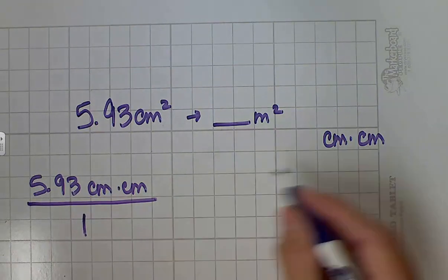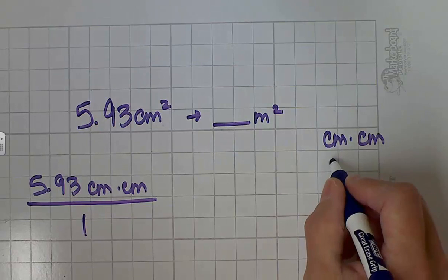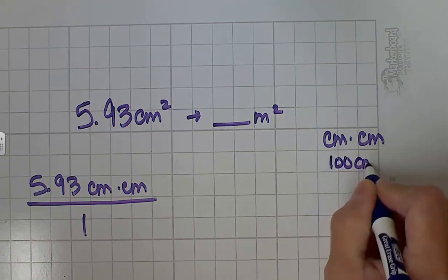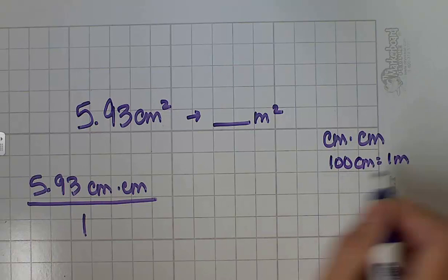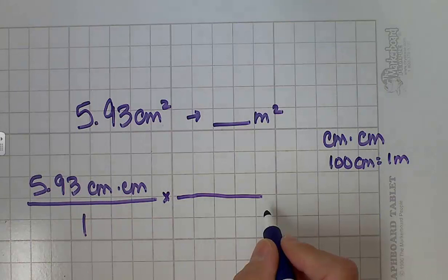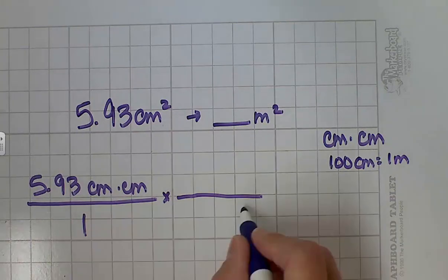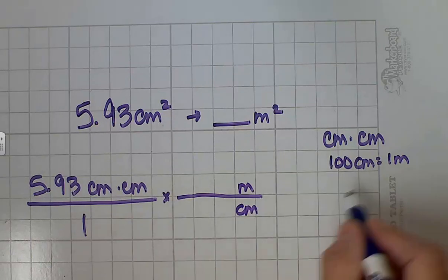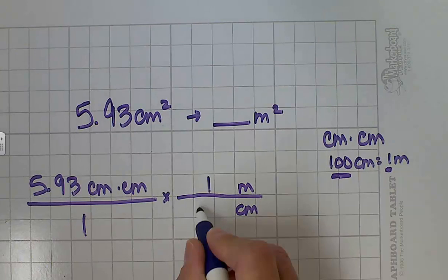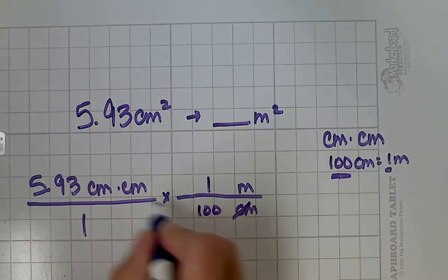What's our conversion between centimeters and meters? I know there are 100 centimeters in one meter. So I'm going to multiply that by something that's equivalent to one. I want to get rid of centimeters. It's in the numerator here, so I'm going to put it in the denominator here. I want to be left with meters. The number one is next to meters. The number 100 is next to centimeters, and centimeters cancel out.